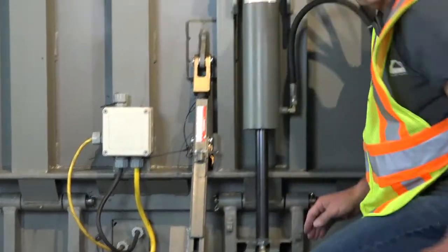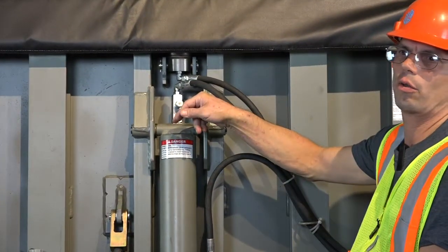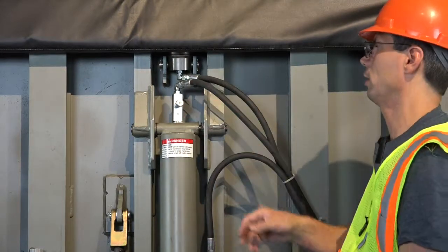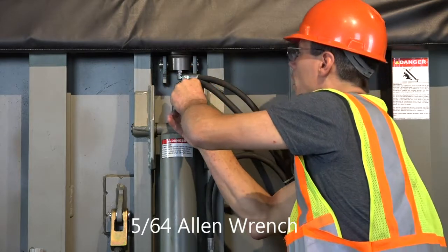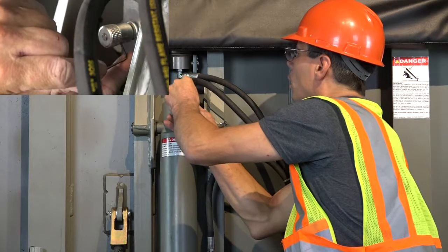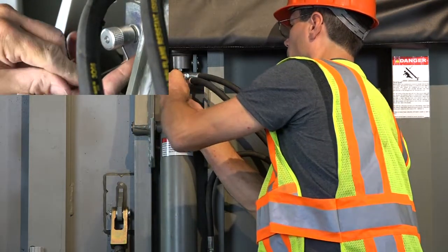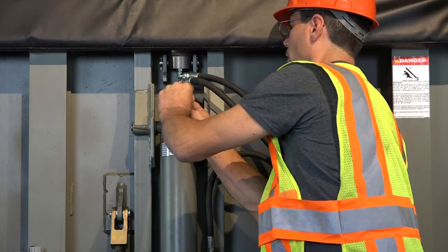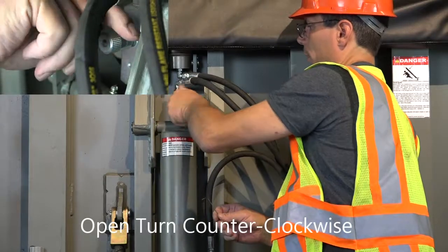Set the switch off to the side. The next thing we need to do is take our flow control valve and we need to back that out all the way, so when we cycle the dock leveler, we get all the air out. Take a small Allen wrench and loosen your set screw. Open that up all the way.